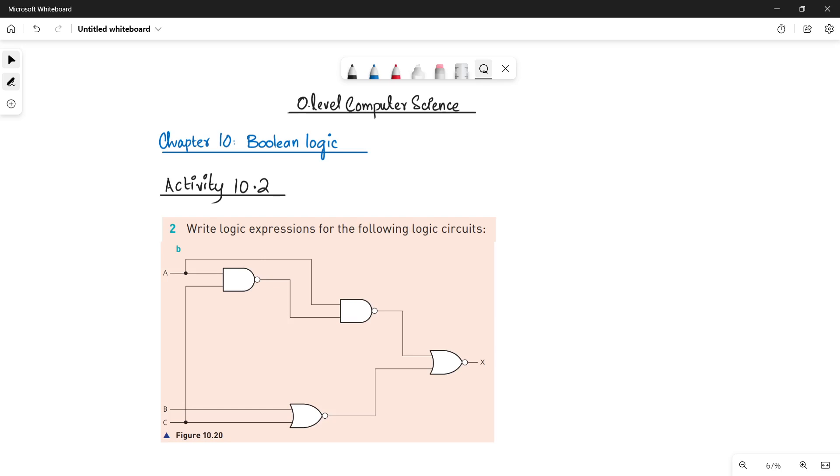In the previous video we already done with part A of this question, so let's quickly do part B in the same way. Here you have a logic circuit that is made up of four logic gates. What you have to do is find out the logic expression of the following logic circuit.